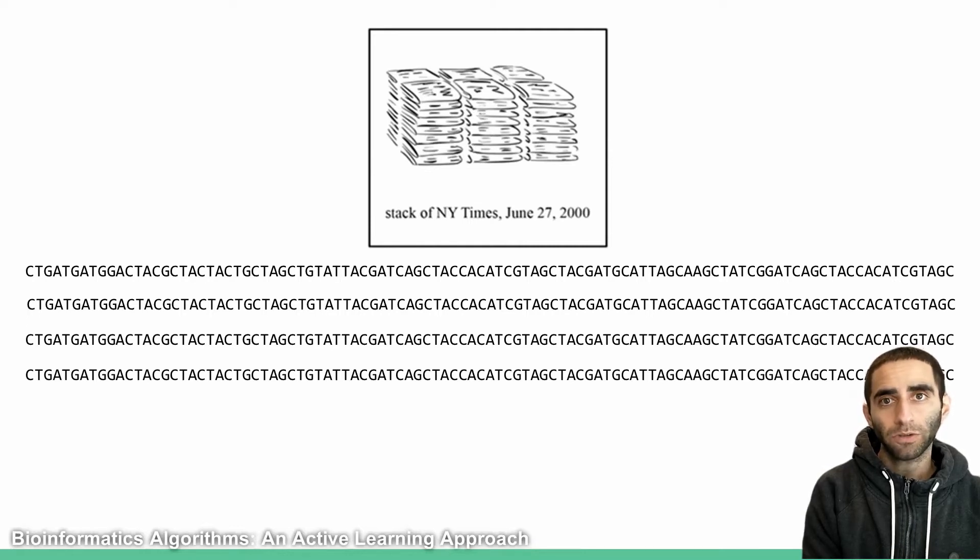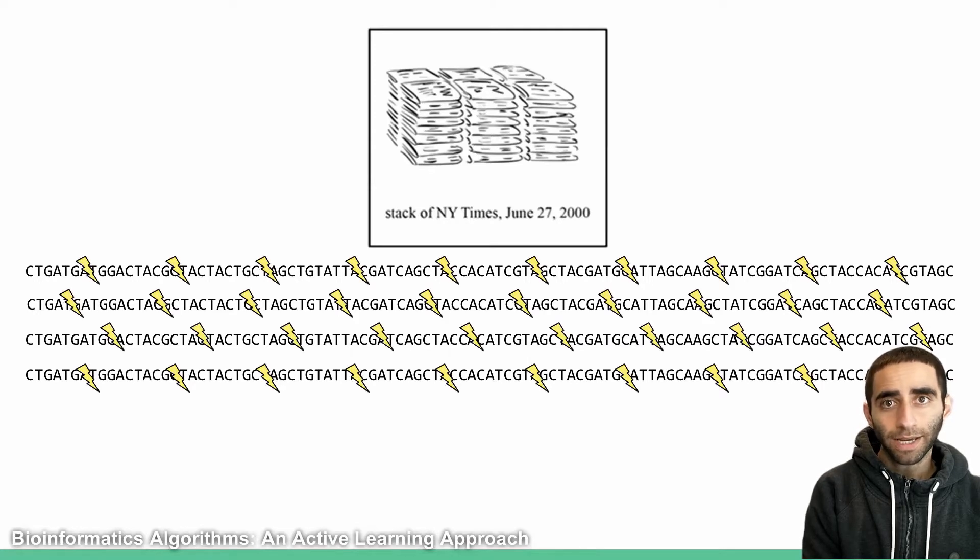So instead, we can use multiple copies of the same exact genome, and just like how we blew up the newspapers in our newspaper problem, we can randomly fragment these multiple copies into small chunks.